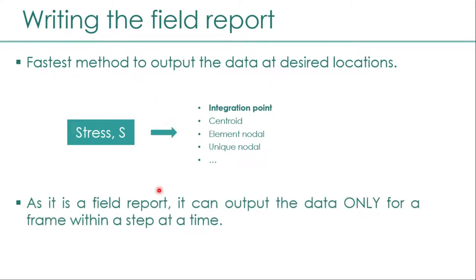Since this is a field report, it outputs field variable data into a text file. It can only output data for a single frame within a step, which is a disadvantage when doing the operation manually. However, when you automate it using Python scripting, you can get data at desired frames within a step or across multiple steps.